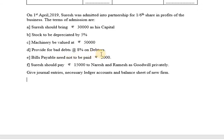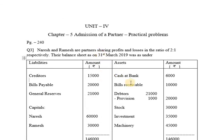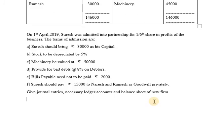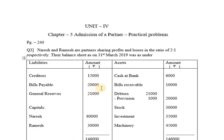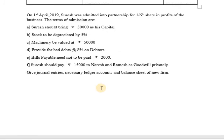Provide for bad debts at 8% on debtors. The debtors value is 21,000, so calculate 8% of that. There is already a provision of 1,000 in the question. Bills payable need not to be paid 2,000 — out of the 20,000 bills payable, 2,000 need not be paid. Suresh should pay rupees 15,000 to Naresh and Ramesh as goodwill privately. So the new partner brings 30,000 as capital and 15,000 as goodwill, but the goodwill is paid to old partners privately.